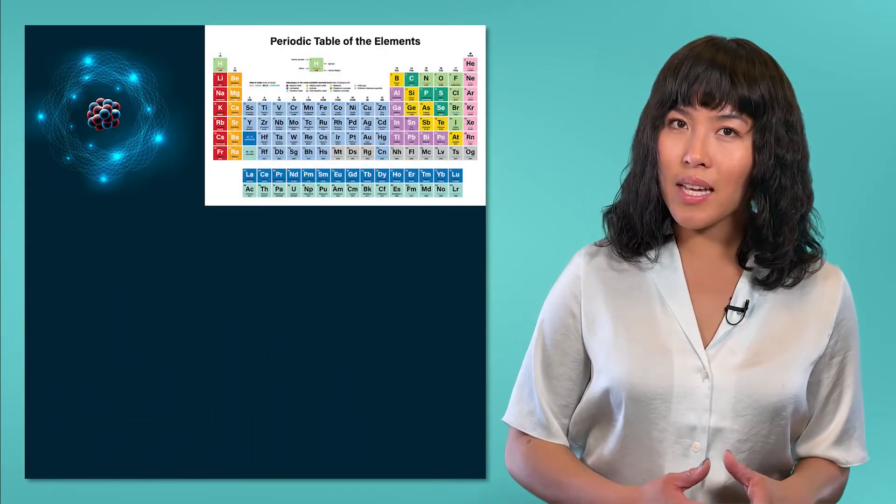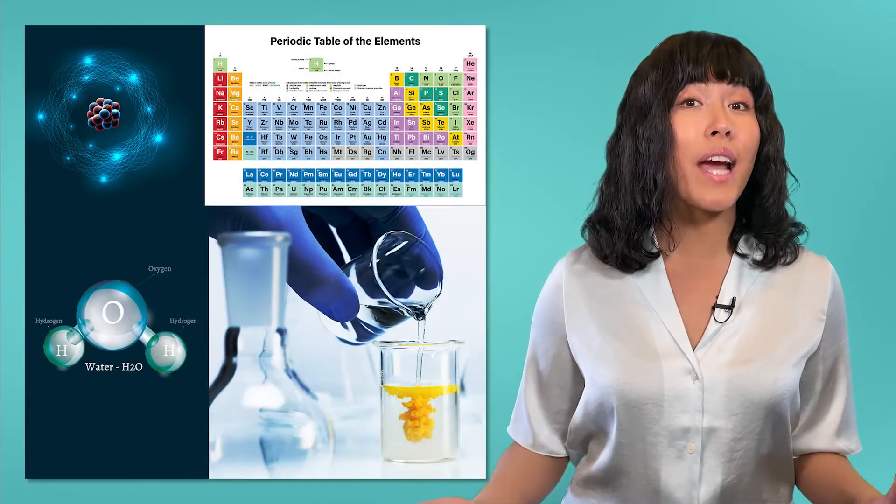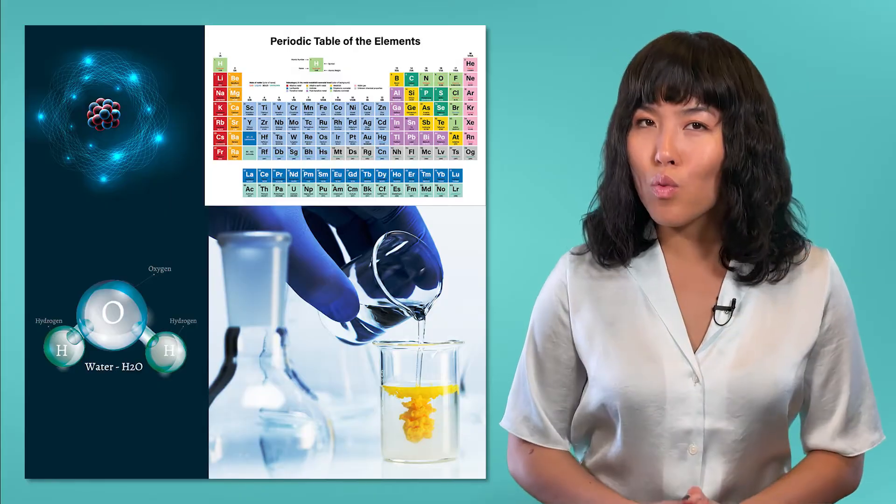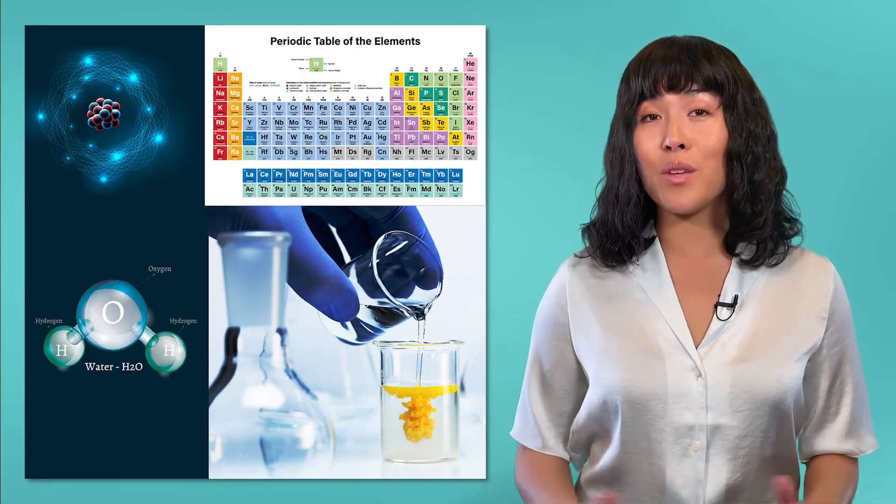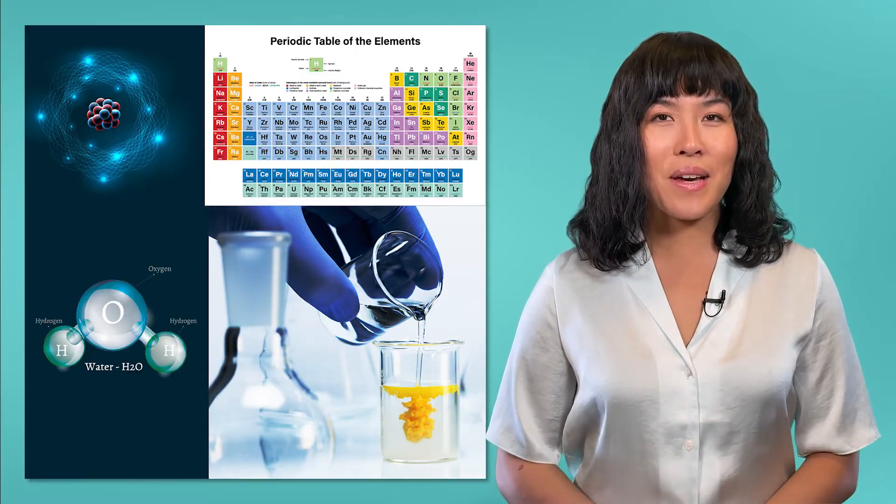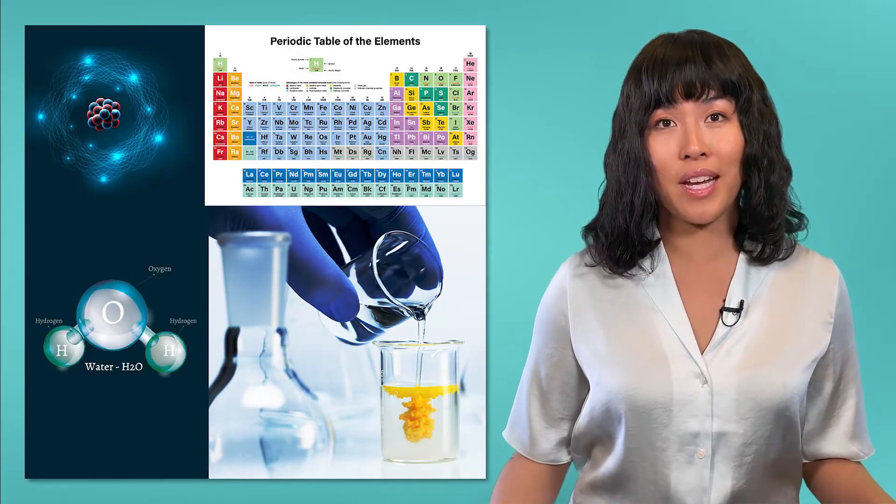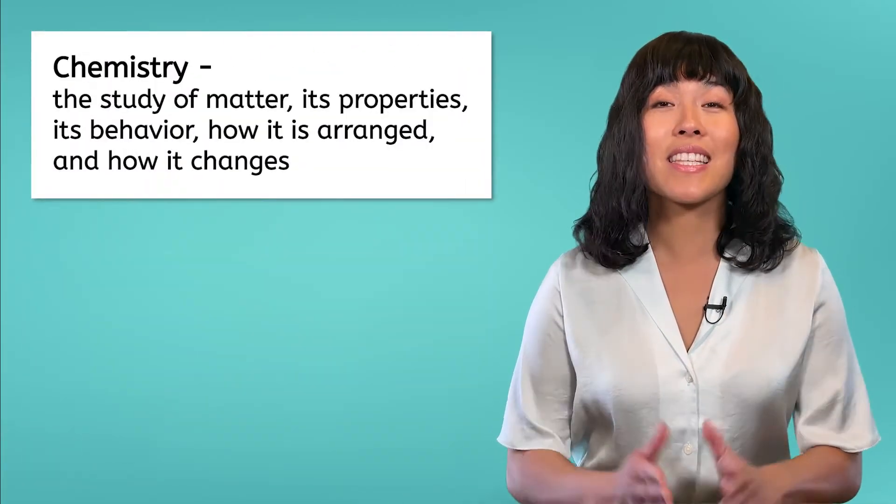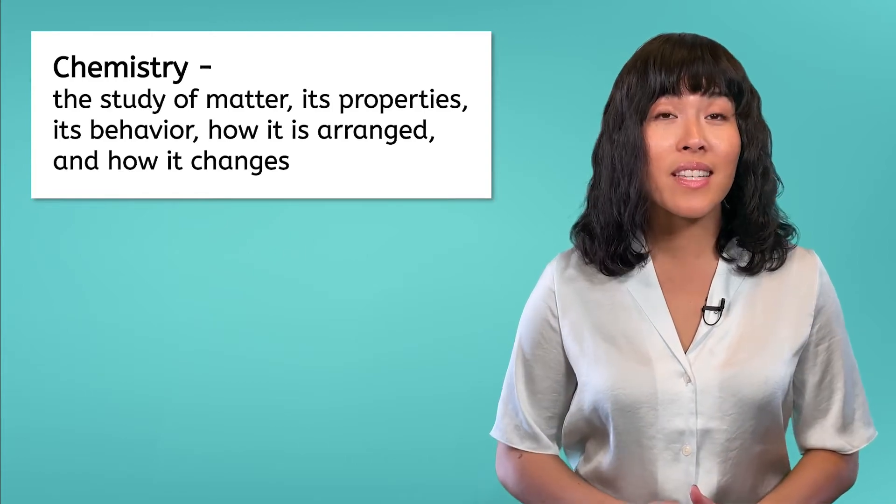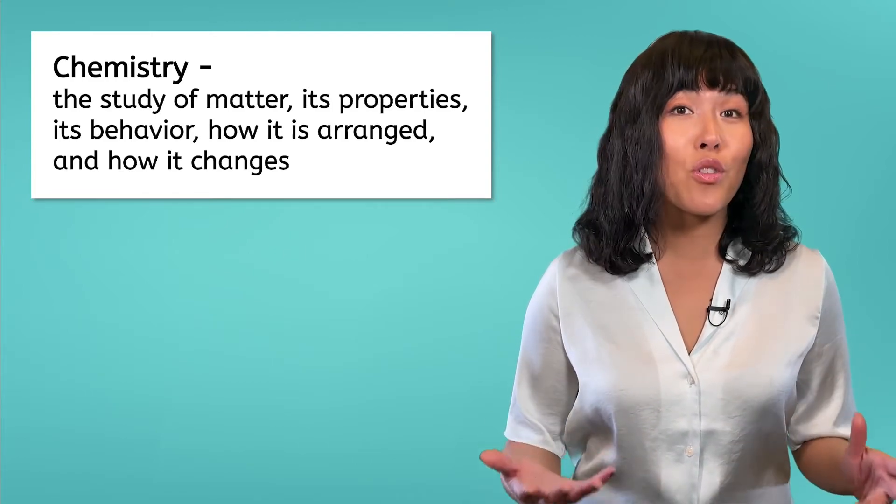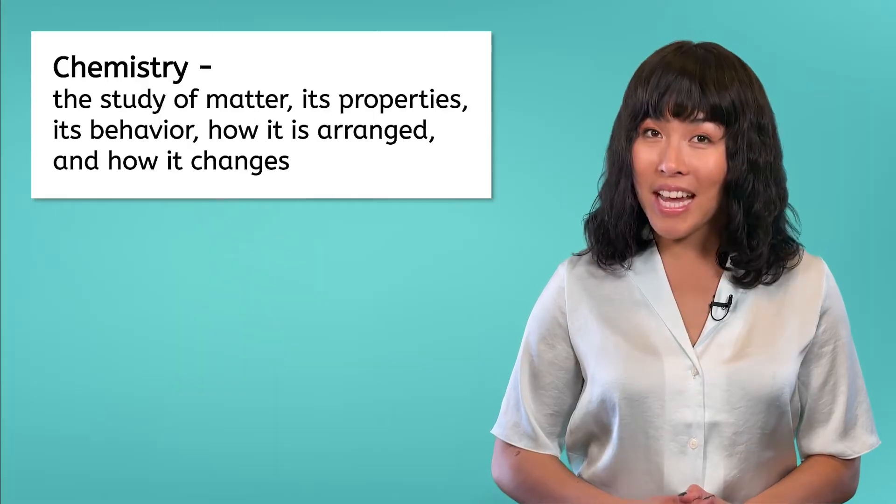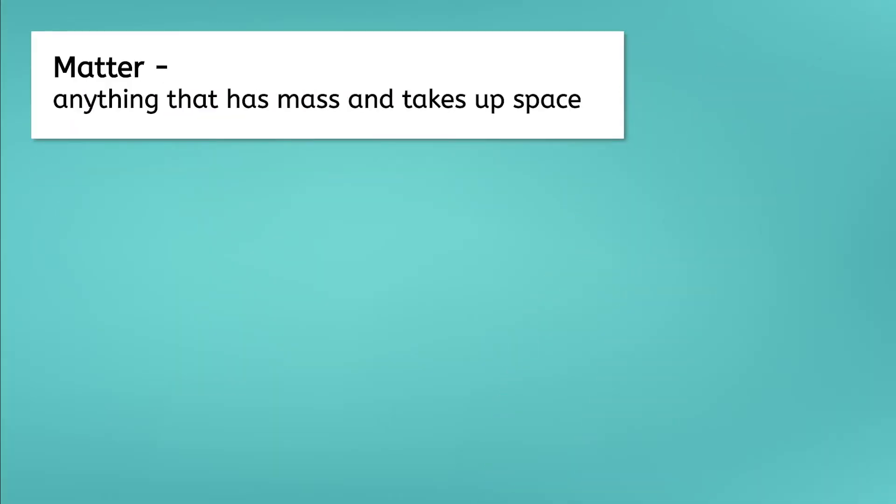Atoms, the periodic table, water, and chemical reactions. These are all words that are usually associated with chemistry class. But what exactly is the field of chemistry? Chemistry is the study of matter, its properties, its behavior, how it is arranged, and how it changes. Matter is the stuff that everything is made of. It is anything that has mass and takes up space.